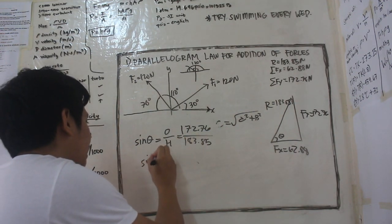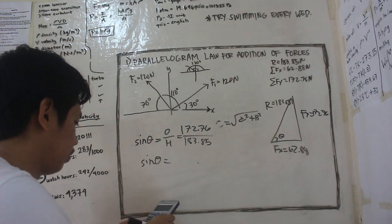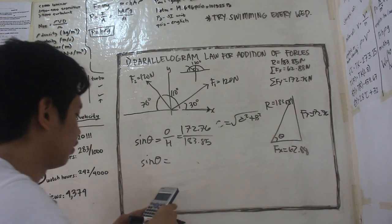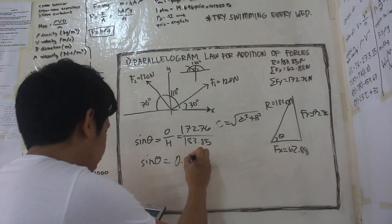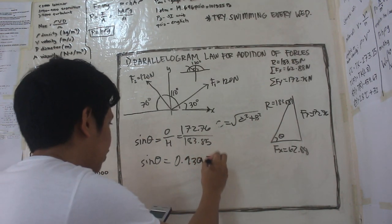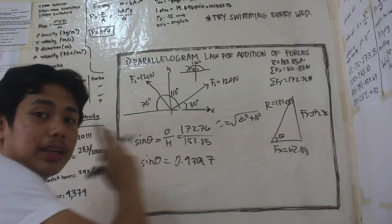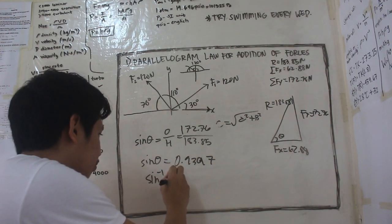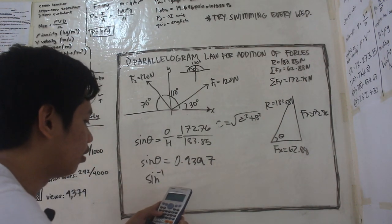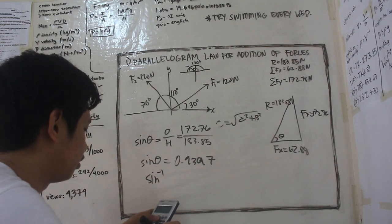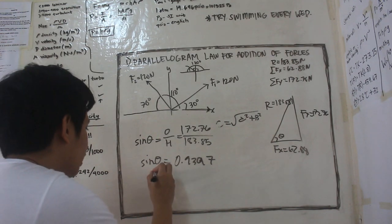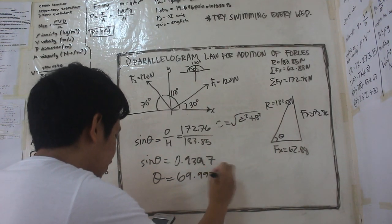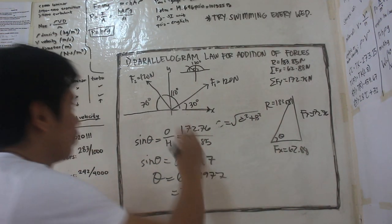Ganon. So makukuha natin na sine theta is equal to 172.76 over 183.85, 0.9397 ganon. So makukuha natin yung, paano ba kunin yung theta? Alam natin na paano ba kunin yung theta, arcsine neto. So kung i-arcsine natin to, makukuha natin theta is equal to 69.9977 or roughly 70 degrees.